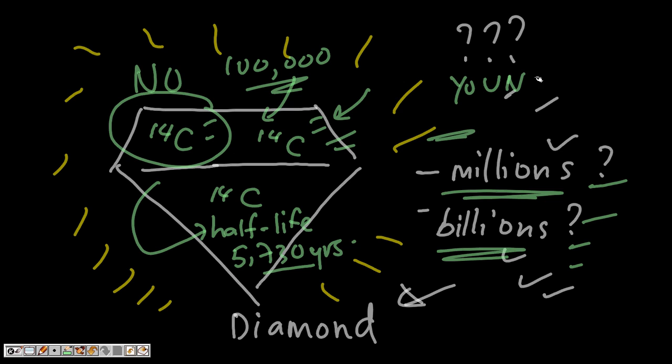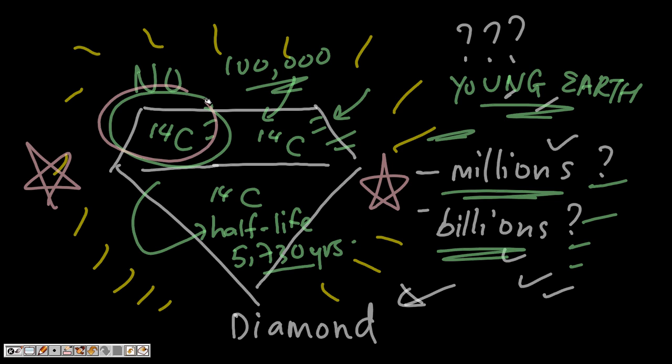Carbon-14 in fact is evidence that we have a young earth, which corresponds to the biblical time scale rather than the evolutionary time scale. So just as the diamond is a woman's best friend, carbon-14 is actually the best friend for creationists to show that the earth is actually quite young relative to the time scale of the evolutionists, and it confirms more the age that is according to the biblical time scale than that of the secular scientists.